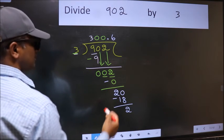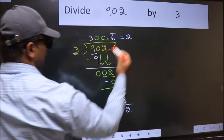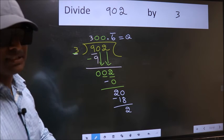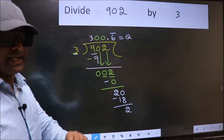That means we get bar on this number. So this is our quotient. Did you understand where does the mistake happen? You should not do that mistake.